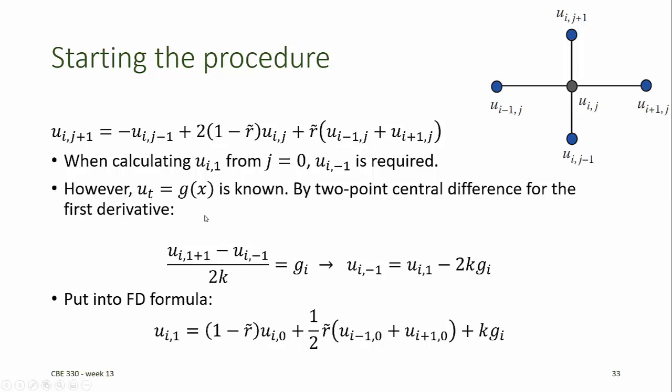However, we do know the partial derivative of u with respect to time at t equals 0. So we can write a two-point central difference approximation for the first derivative to obtain estimates for the unknown points outside the domain before time equals 0, and substitute those into the equation for u sub i at j minus 1.